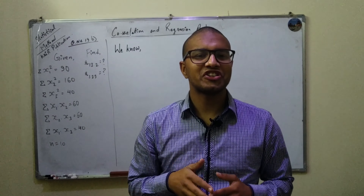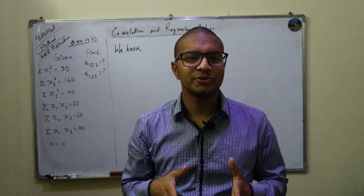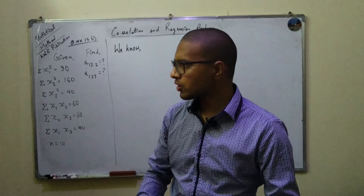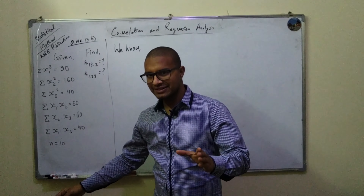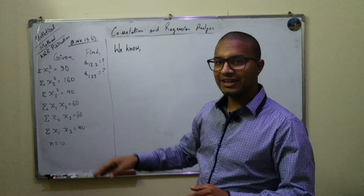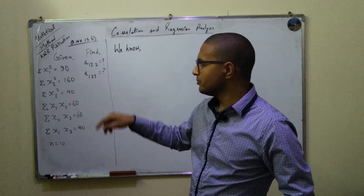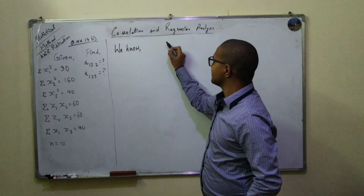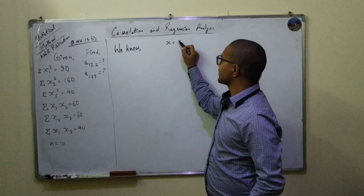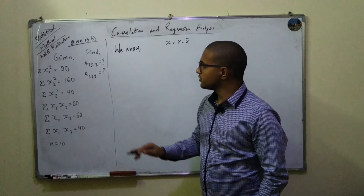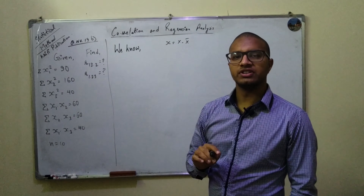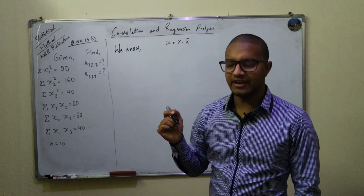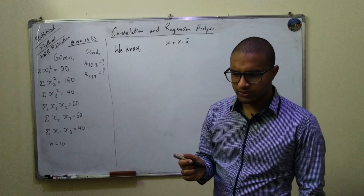Hello and welcome back. In this session, what we will be covering is how correlation is computed from the mean. We've been given small x, which means it is x minus x-bar — deviation from the mean. So since earlier we have done different kinds of problems, this one is a bit different.